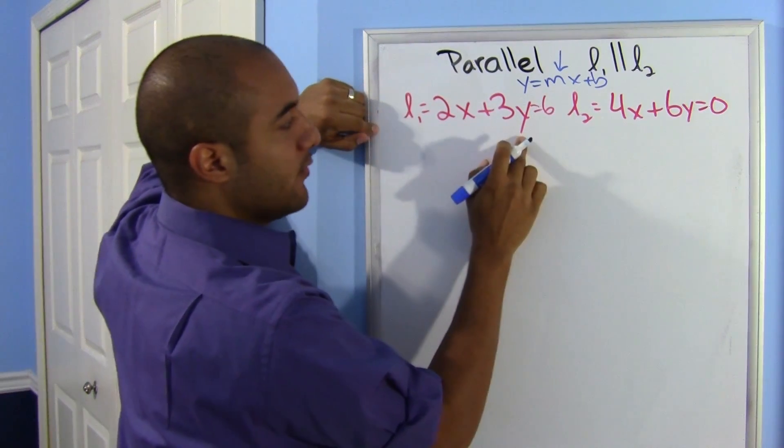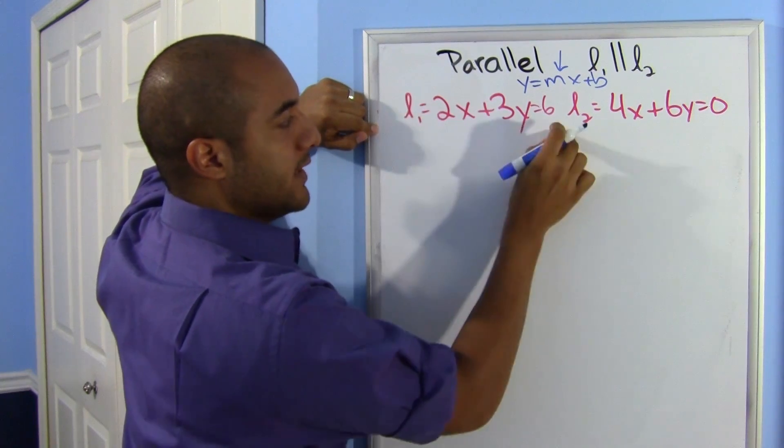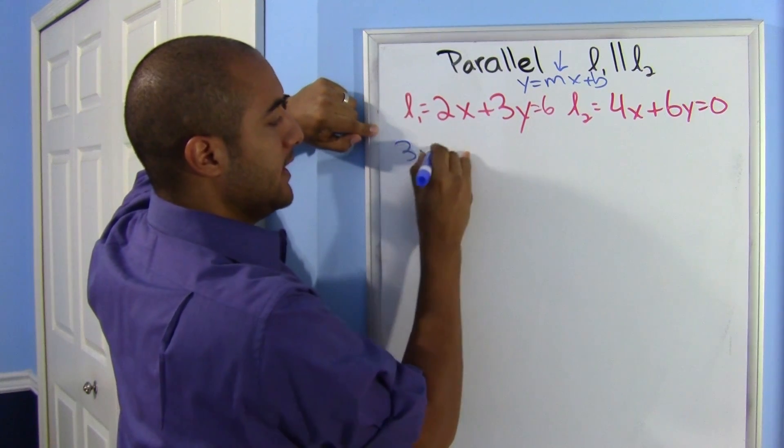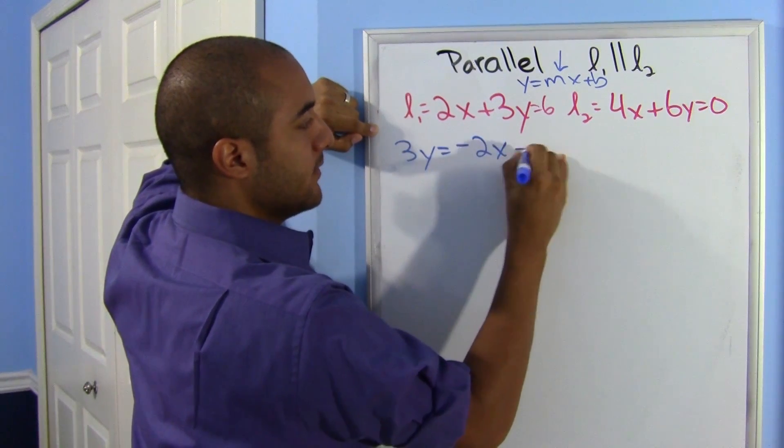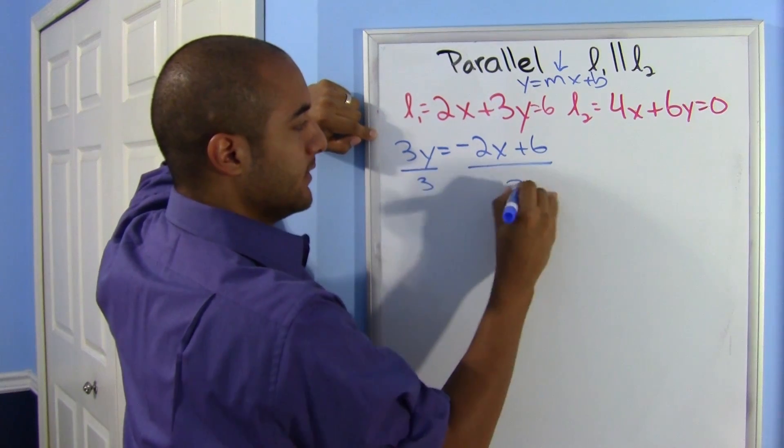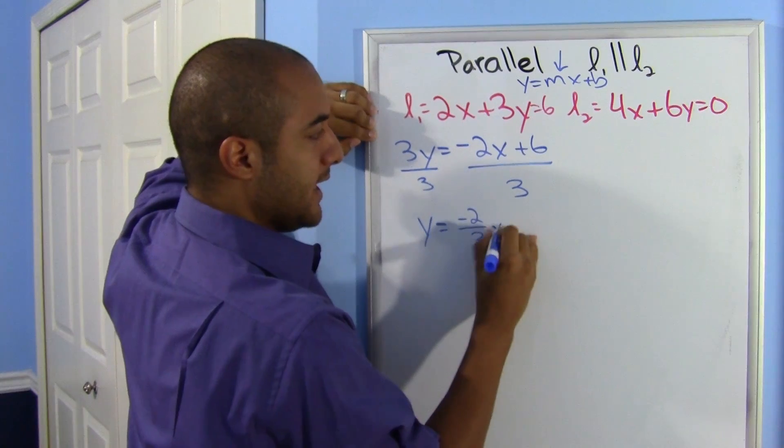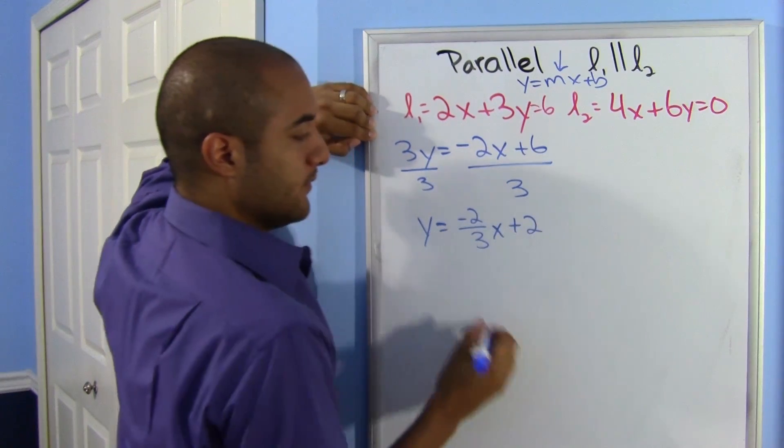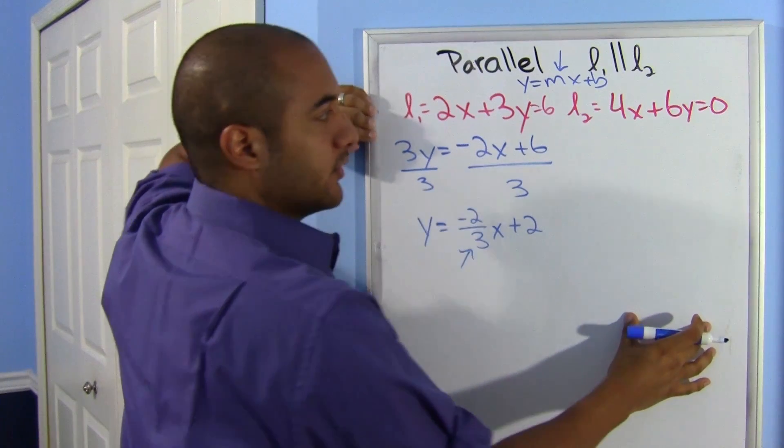I noticed that my x and my y are on the same side, so I'm going to get rid of that 2x. So 3y equals minus 2x plus 6, divide by 3, and y is equal to negative 2 over 3 x plus 2. So this is my slope.